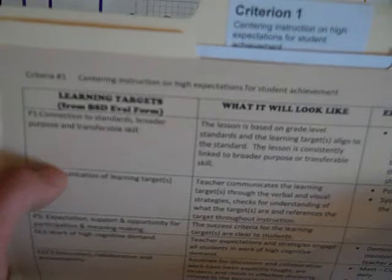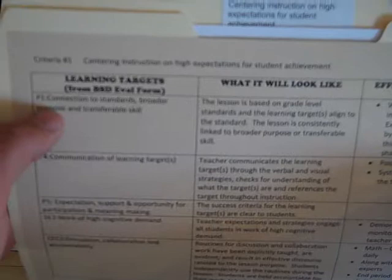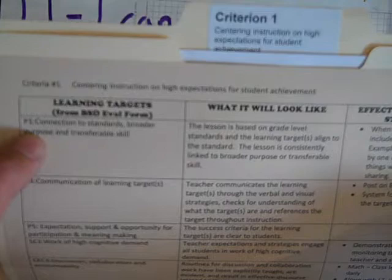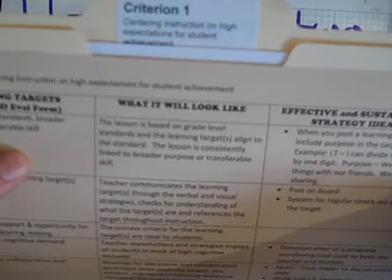Okay, so speaking of, let's go to our first criterion. And if you notice over here on the left, this would be the Bellingham School District Evaluation. Look at that first criterion — centering instruction with high expectations for student achievement. And if you drill down to that 5D, it's connection to standards, broader purposes, and transferable skills. And come on over here, what does that look like? We're going to talk about a simple strategy that you can put in place. So this will be a short video today.